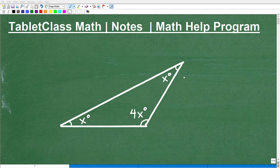Okay, let's determine the measure of each angle of this triangle. So we have this angle, this angle, and this angle. Obviously, triangles have three angles.